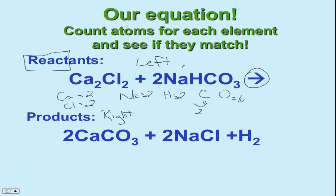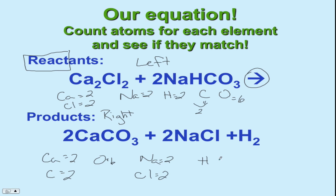We know how much of the reactants we have. The law of conservation of mass says we should have the exact same amounts in the products — what goes into the reaction must come out. Looking at the products: Ca, C, O, Na, Cl, and H — all the same elements. Counting them: two Ca, two C, six O, two Na, two Cl, and two H. Everything matches. This chemical equation proves the law of conservation of mass and is balanced. Make sure you know how to count atoms, because we'll need it to help us balance chemical equations.